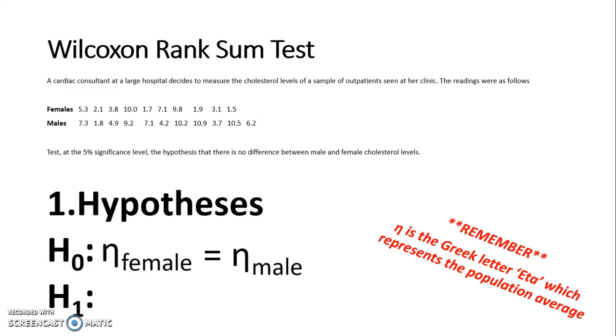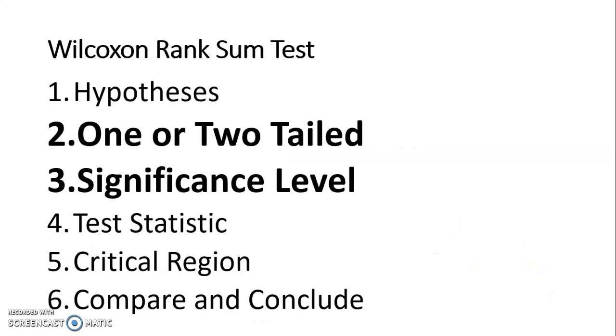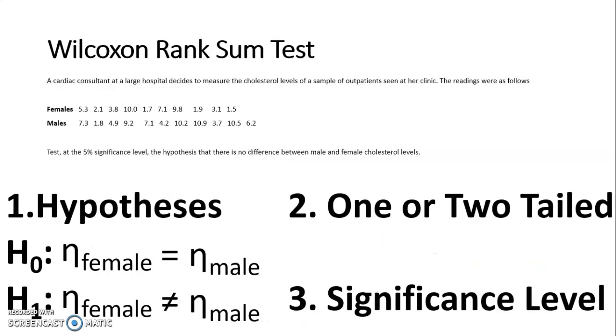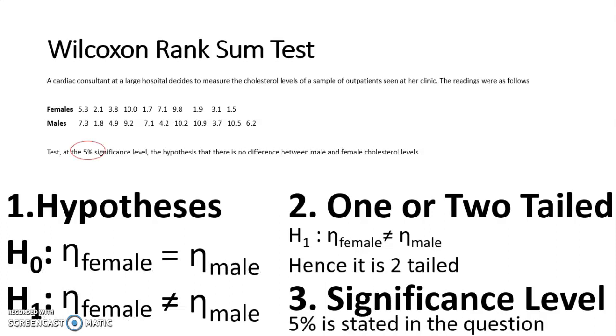Our alternative hypothesis is either not equal to, less than, or greater than. For this question, it says there is no difference so the only alternative is that there is a difference. Therefore eta female is not equal to eta male. Because this is not equal to, that means I'm looking at less and greater than, and therefore it's two-tailed. It states in the question that this is five percent.